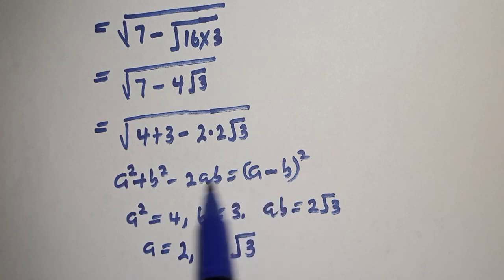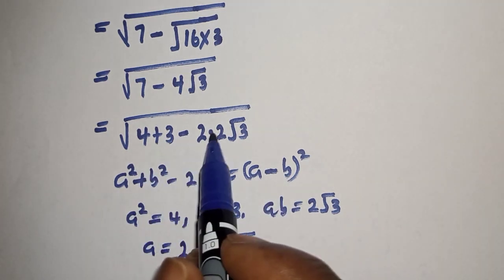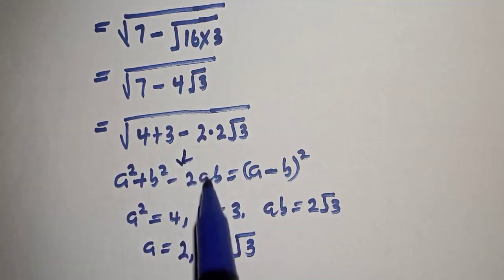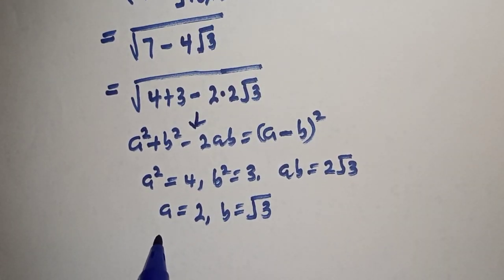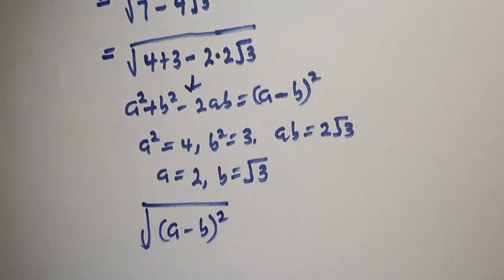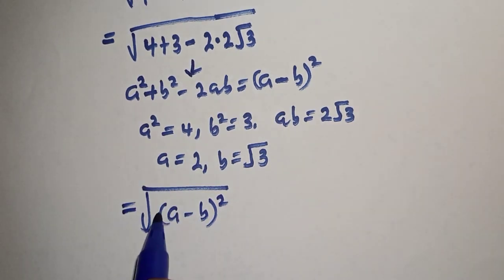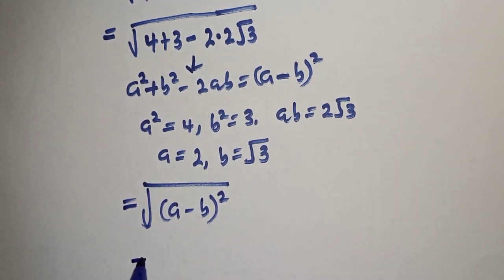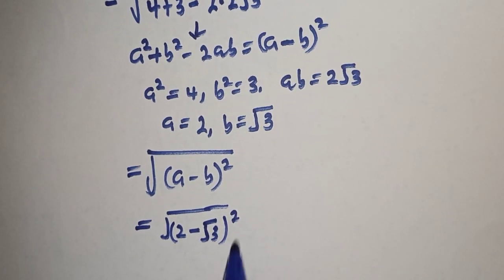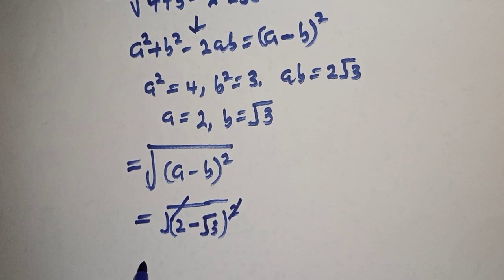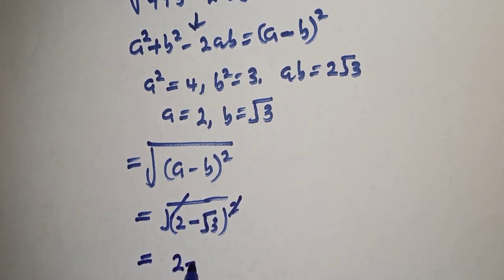Since all of this is equal to this and this is equivalent to this, therefore we have square root of a minus b squared. But we already know that a is 2, square root of 2 minus b is root 3 squared. Then this one will cancel this. This is equal to 2 minus